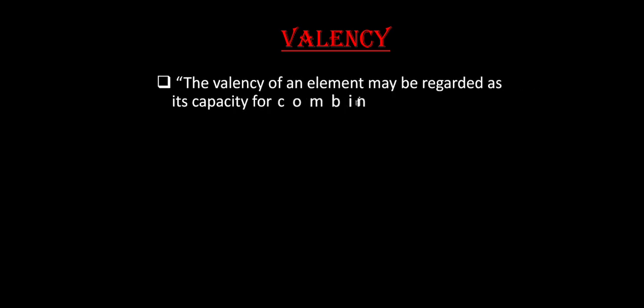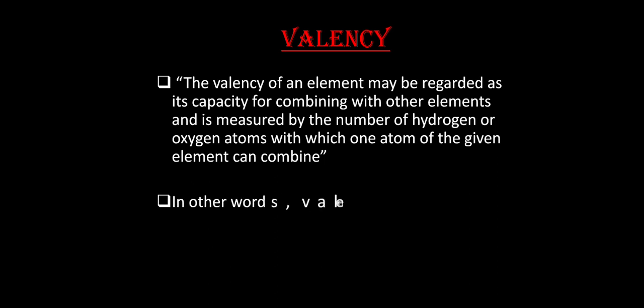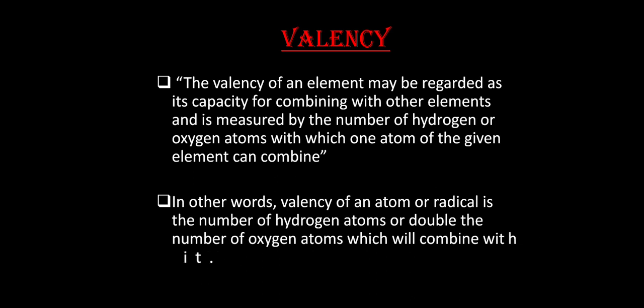The next topic is valency. The valency of an element may be regarded as its capacity for combining with other elements — basically its combining capacity. It is measured by the number of hydrogen atoms or double the number of oxygen atoms with which one atom of the given element can combine. So if an element combines with four hydrogen atoms, its valency is four; if it combines with two oxygen atoms, the valency is also four, because for oxygen you take double the number.